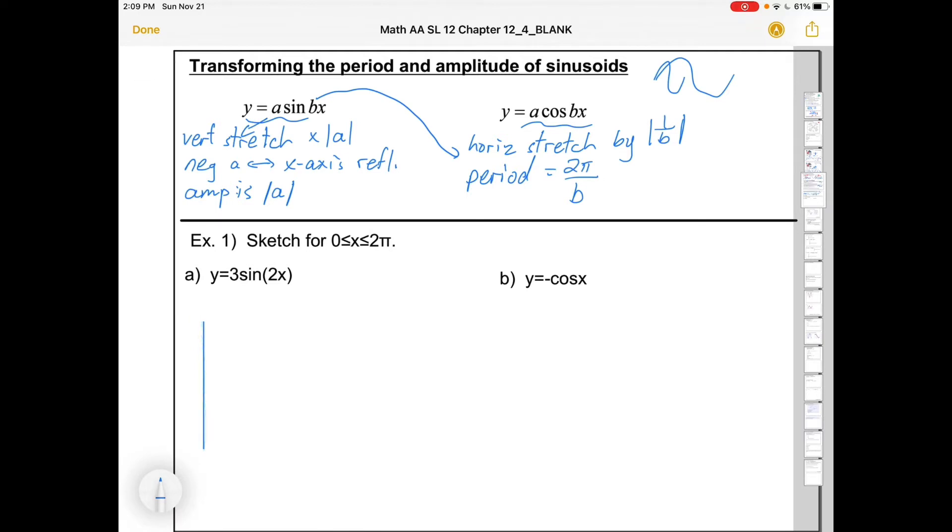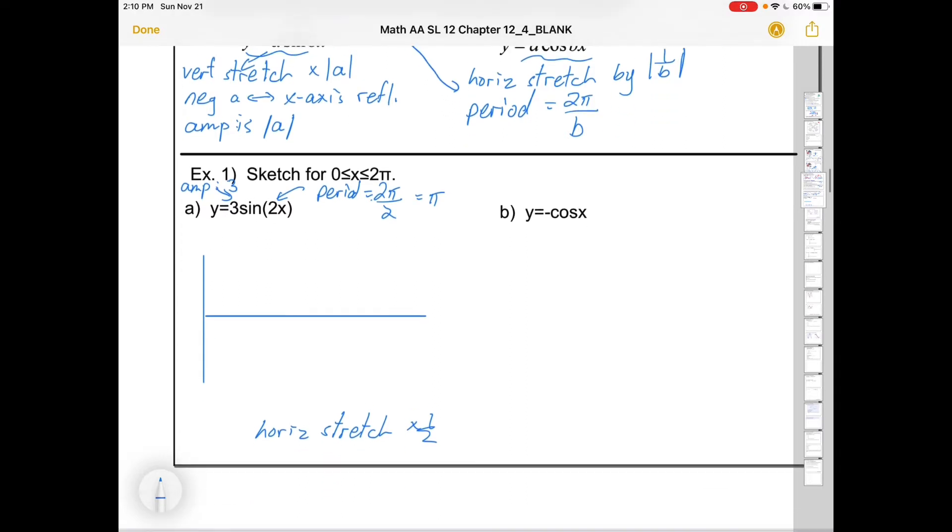So let's think about this first one. 3 sine of 2x. Before I go ahead and graph it, I'm going to need to describe it. So that 3 is a vertical stretch. Let's just call it, though, by its trig name. It's got an amplitude of 3. That means it's going to vary 3 from the midline. This 2 here is our b value, so period is 2π, 1 over 2, or just π. If you prefer, you could say it's a horizontal stretch by a factor of a half. Normally, the period is 2π, but we're stretching it by a factor of a half, so it's going to be half as big. It's π. You can see how that's a more painful way of getting what we got over here.